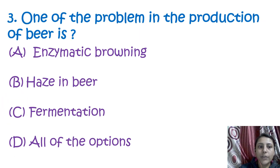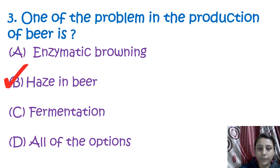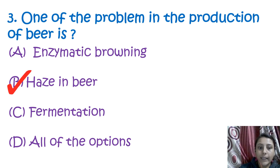The third question is: one of the problems in the production of beer is haze. Haze in beer is when it becomes unclear to vision — that turbidity is known as haze.